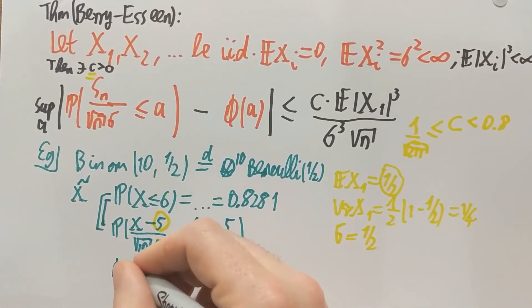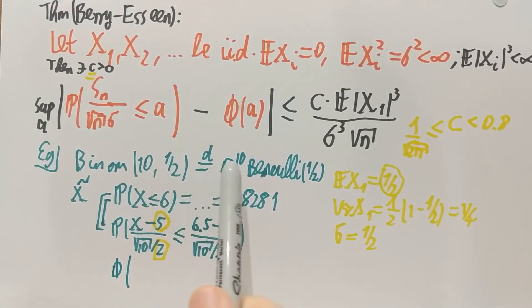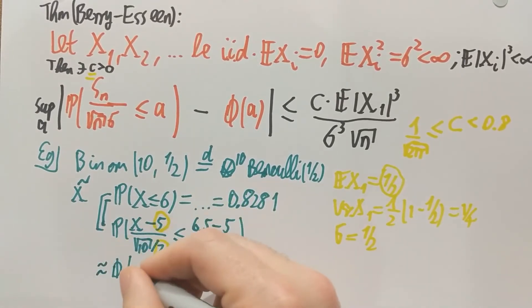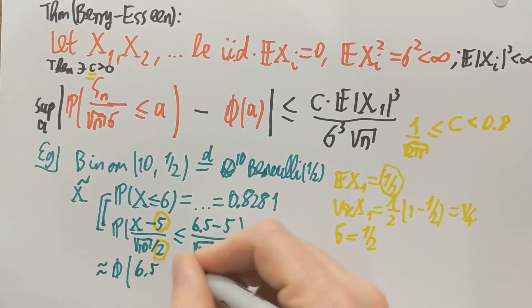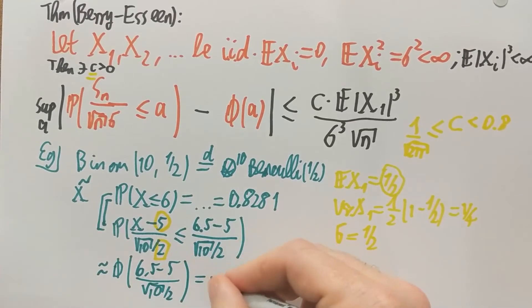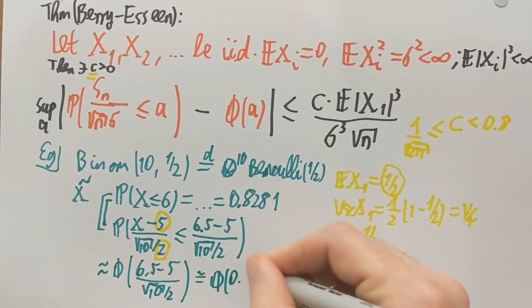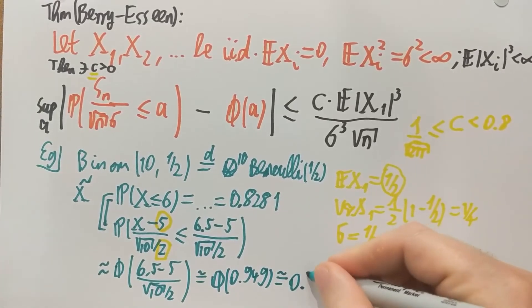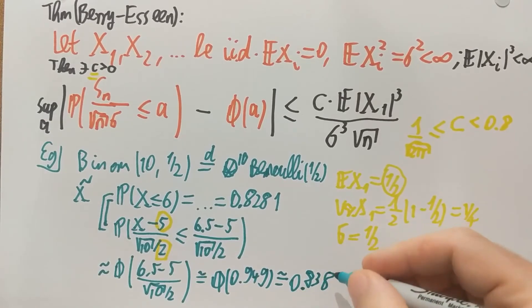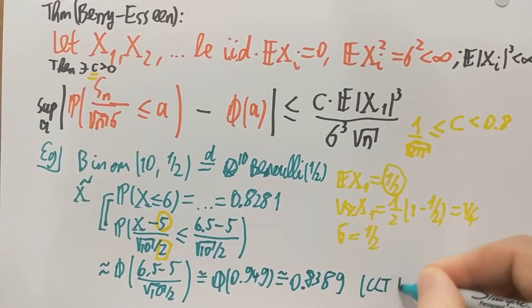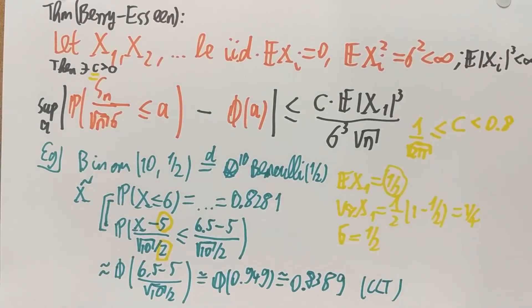Now, what is phi? So what would the central limit theorem say if I would accept it for the tenfold convolution of Bernoullis? It would say that I subtracted the mean, I divided by standard deviation, so this should behave like standard normal. So this should be close to phi at exactly this number, 6.5 minus 5 over root 10 over 2. If you do the calculation, that's approximately phi at 0.949, and you can look up the table. You end up with 0.8389. So that's the true value, that's the central limit theorem approximation. They are not very far. So they are pretty close to each other.